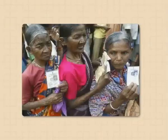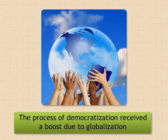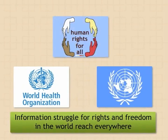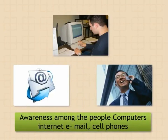Now let us study the political and social changes. The process of democratization received a boost due to globalization. They gained a lot of political, social, and scientific knowledge from various countries. Information about the struggle for rights and freedom in the world can now easily reach everywhere. It creates better awareness among the people. The use of computers, internet, email, cell phones, etc. has led to increased contact between people.